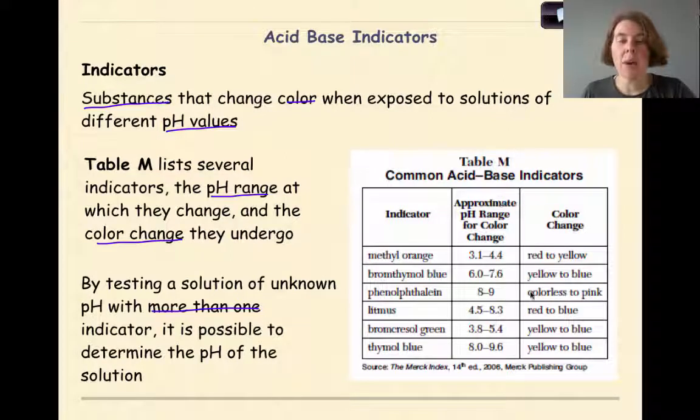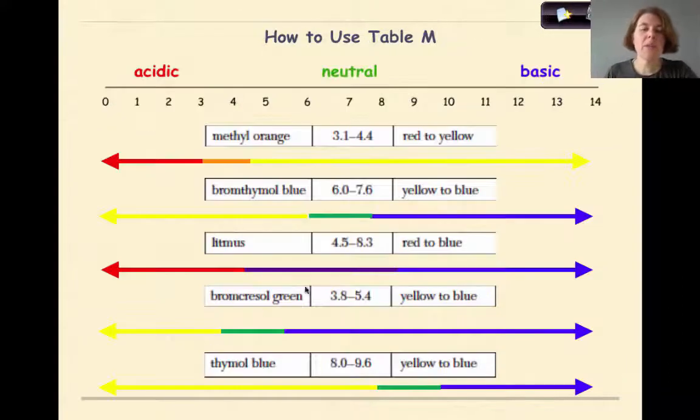So here is table M of your reference table. They list a column of indicators, approximate pH range for color change, and then the color change. But really seeing what this looks like is important to understanding how to use it. So here is a breakdown of some of the indicators that are listed on table M.